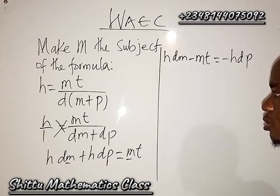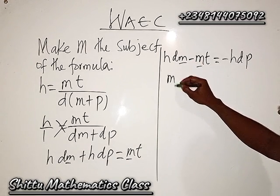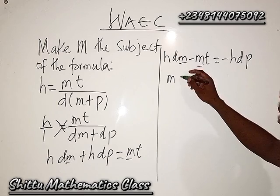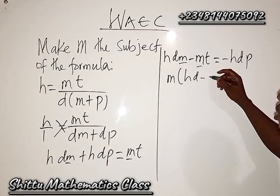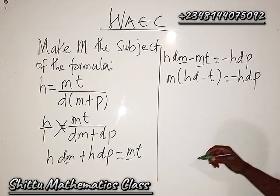Now the next thing we are going to do is we have m here, we have m here, so I try to factorize m out. I have m times (h·d minus t) equals minus h·dp.